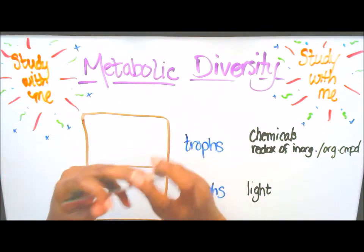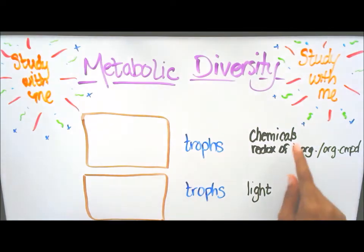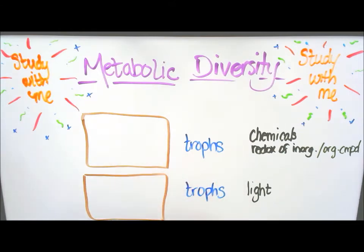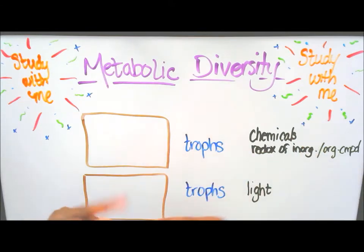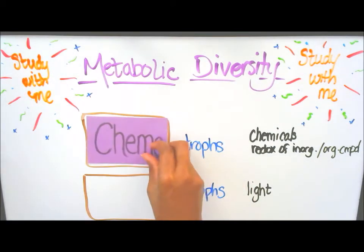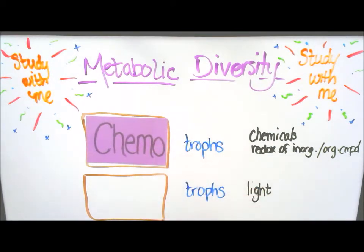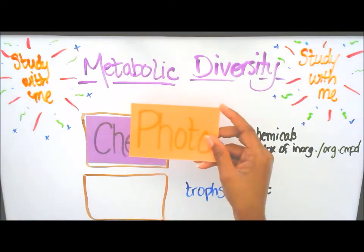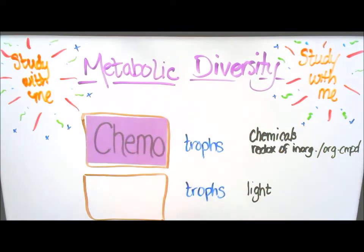Here we have chemicals — redox reactions of inorganic or organic compounds. What troph is that? We know that chemicals is our clue for chemo, so it's a chemotroph. And then we have light — we know that photo means light, so it's phototrophes.